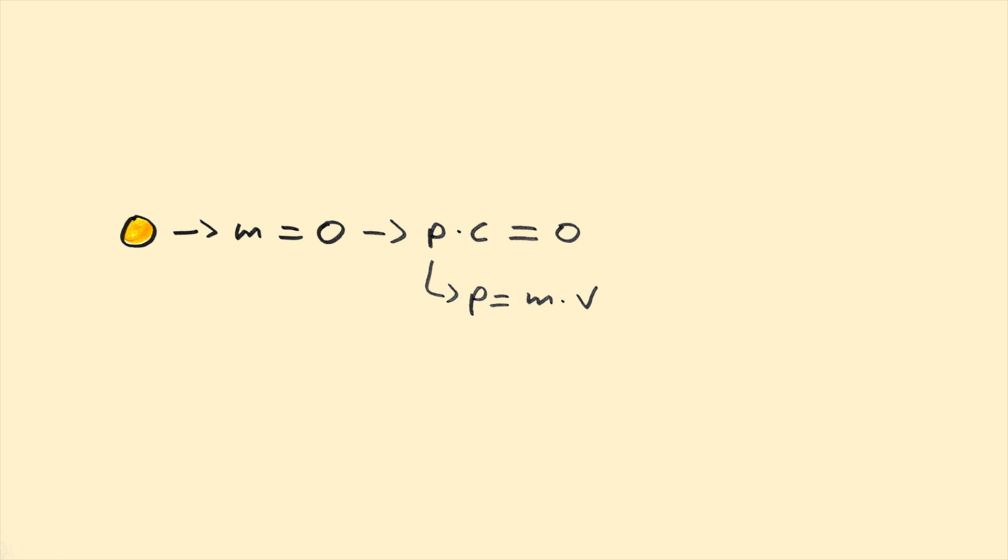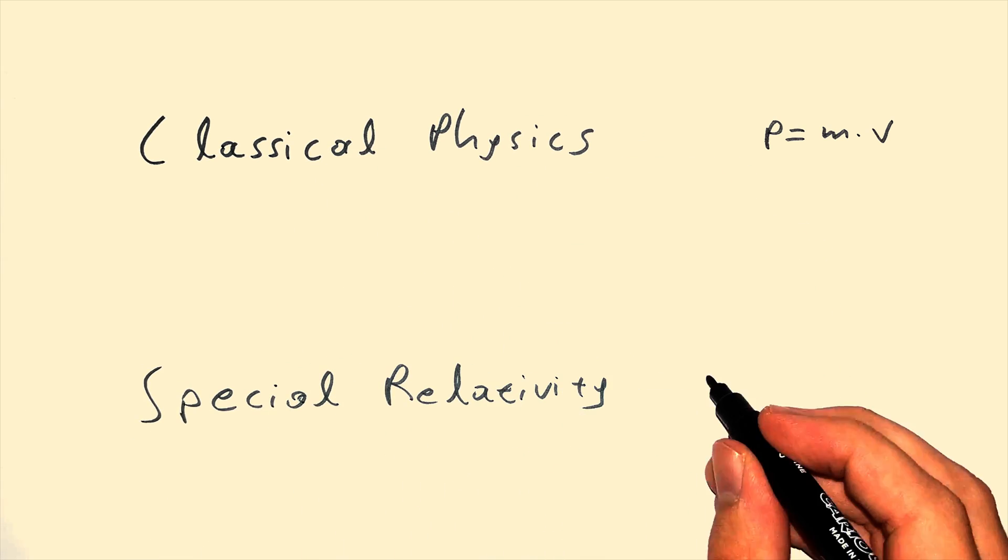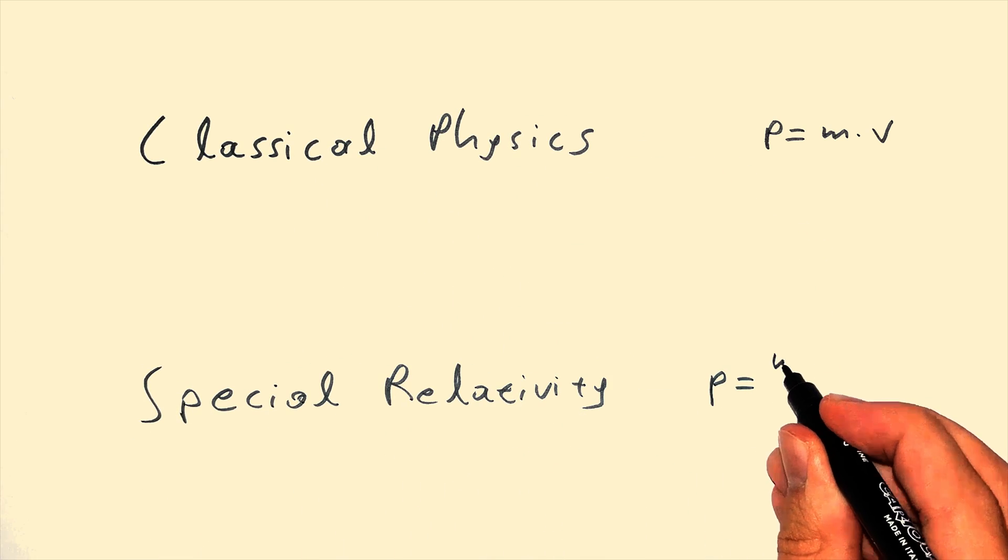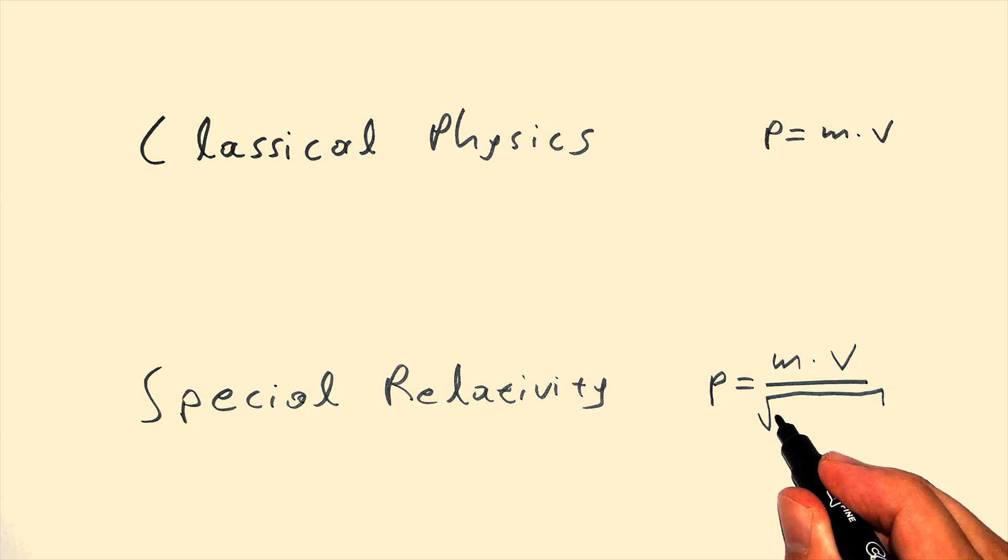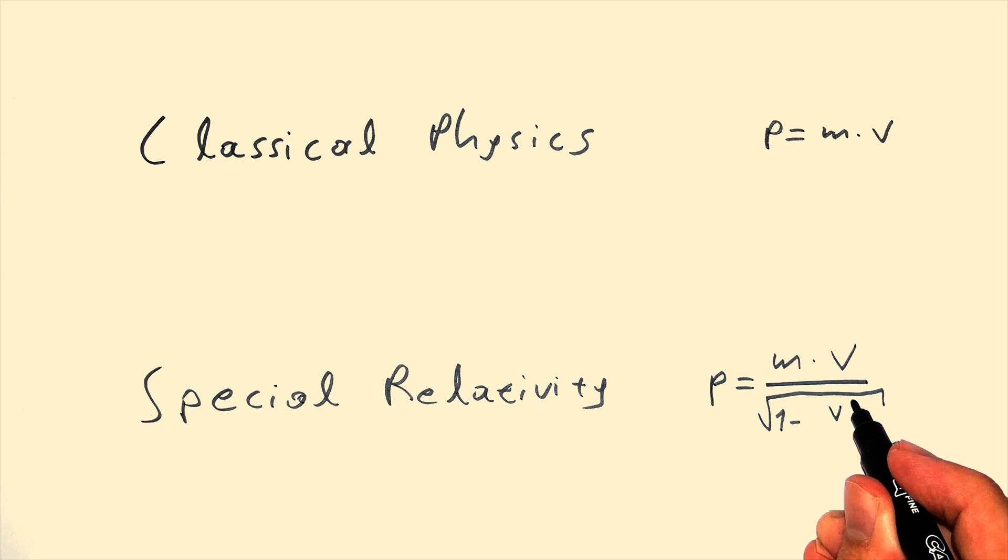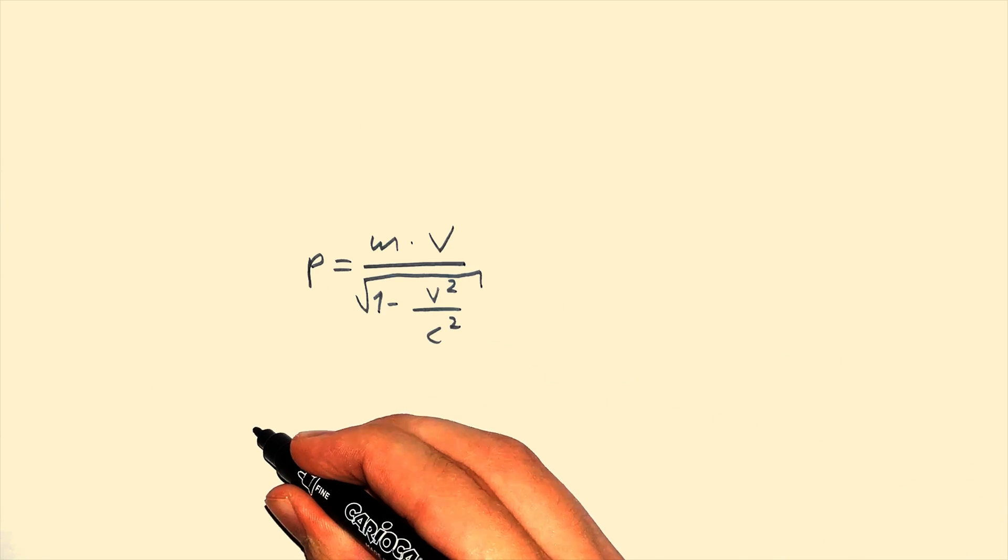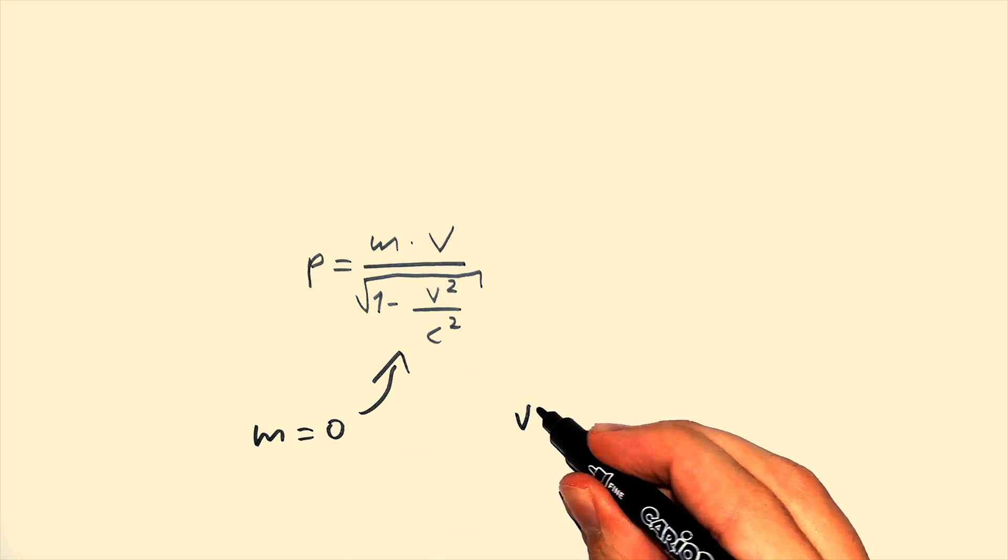Well, momentum is mass times velocity in classical physics. In special relativity, momentum is mass times velocity divided by the square root of 1 minus velocity squared over the speed of light squared.